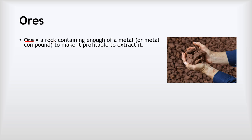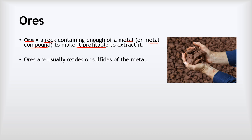An ore is a rock containing enough of a metal or metal compound to make it profitable to extract. Most rocks contain various metals, but often not in high enough concentration to make extraction worthwhile. We only call it an ore once there's enough metal to make it worthwhile. Ores are usually oxides or sulfides of a particular metal — for example, iron ore is iron oxide, and tin ore might be tin sulfide.